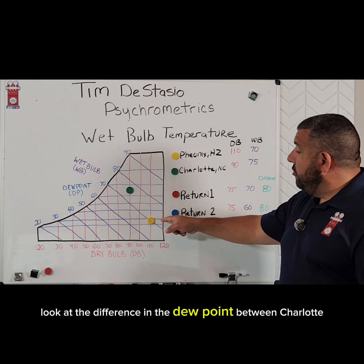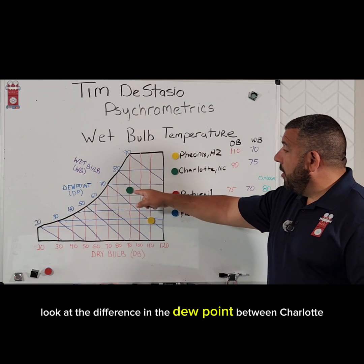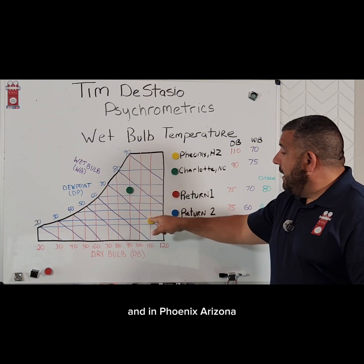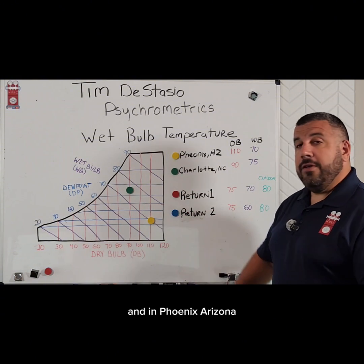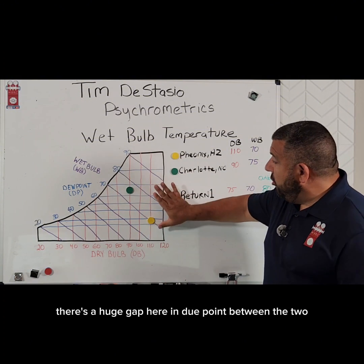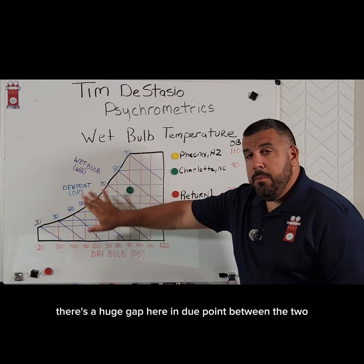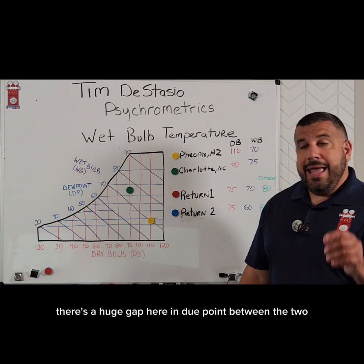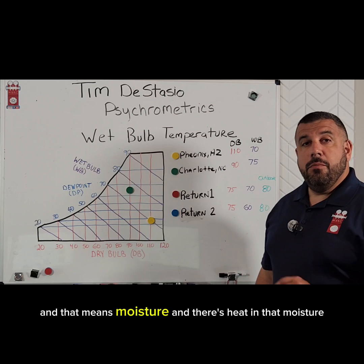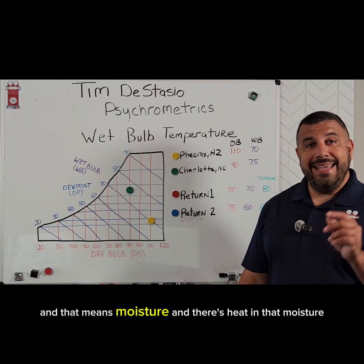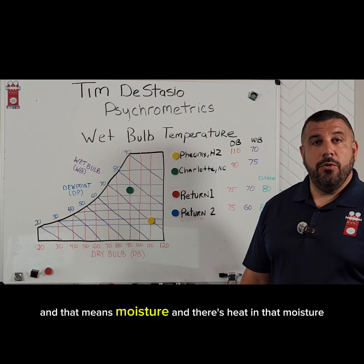Look at the difference in the dew point between Charlotte and Phoenix, Arizona. There's a huge gap in dew point between the two, and that means moisture — and there's heat in that moisture.